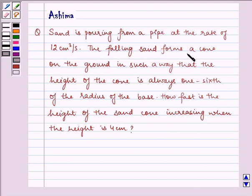The falling sand forms a cone on the ground in such a way that the height of the cone is always 1/6th of the radius of the base. How fast is the height of the sand cone increasing when the height is 4 cm?